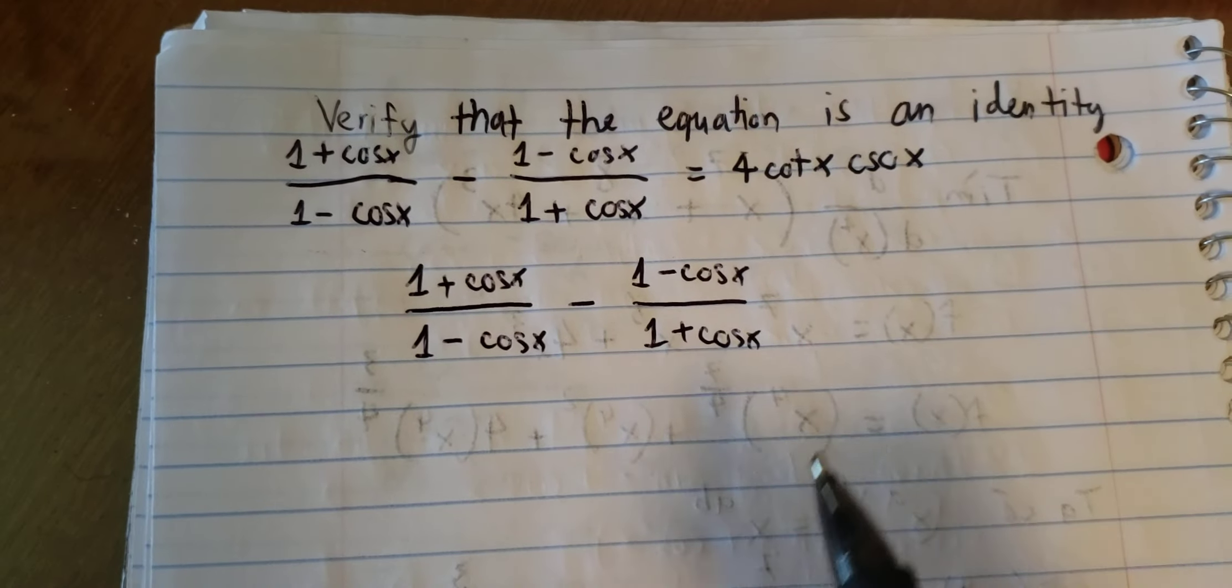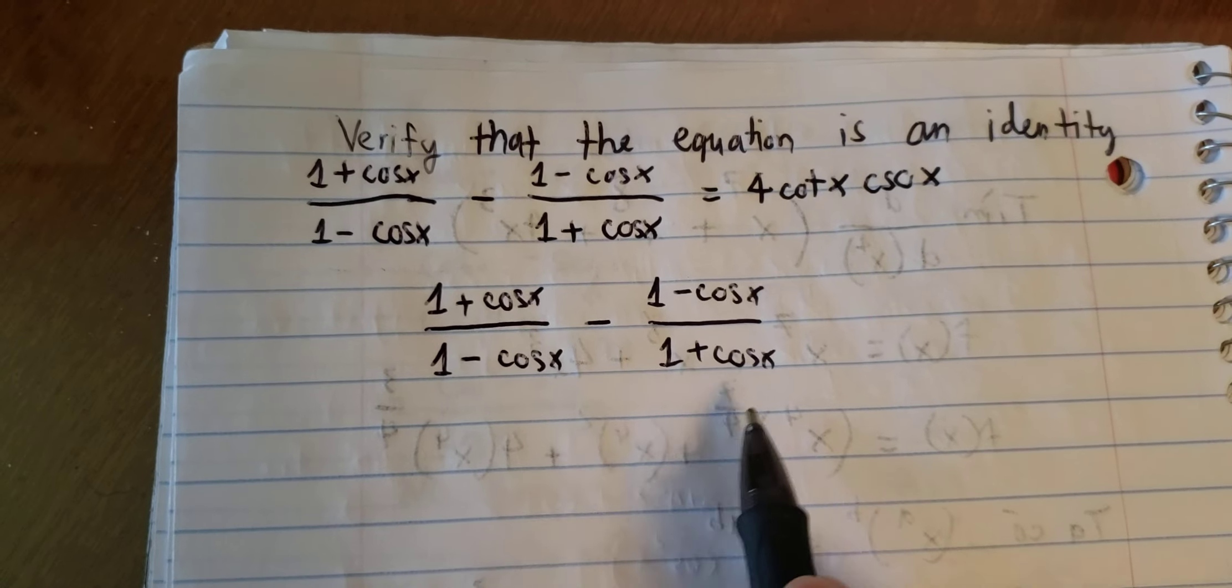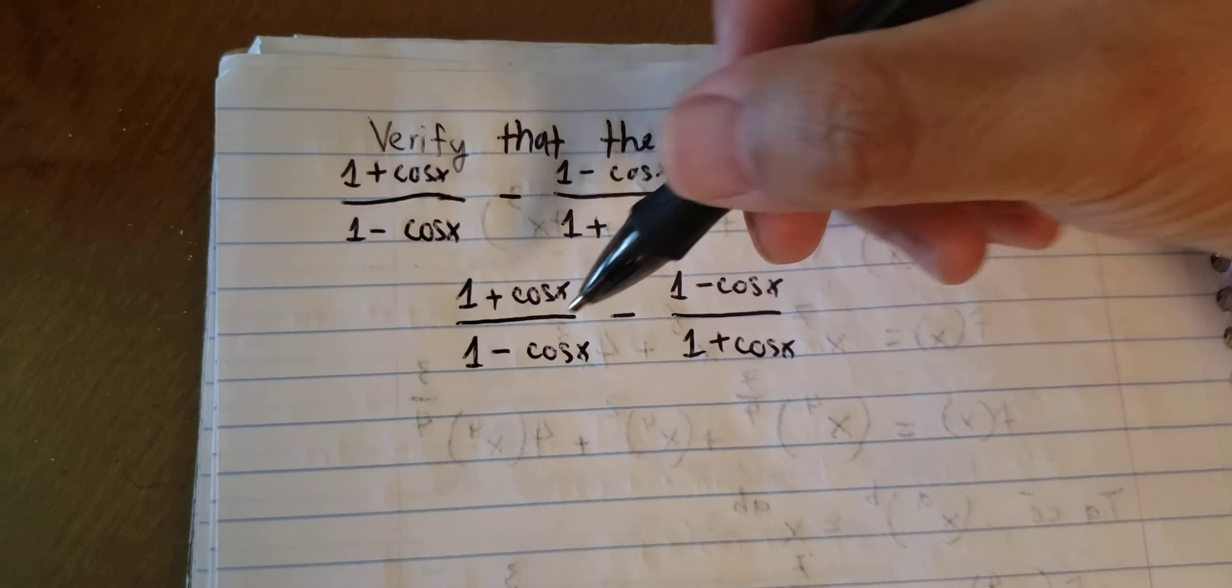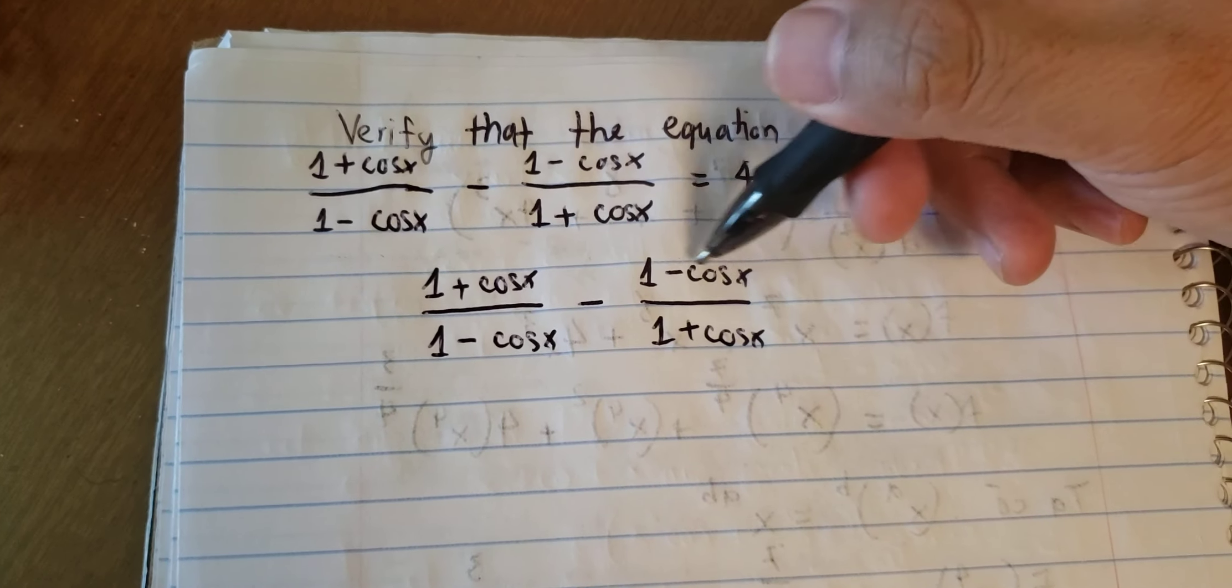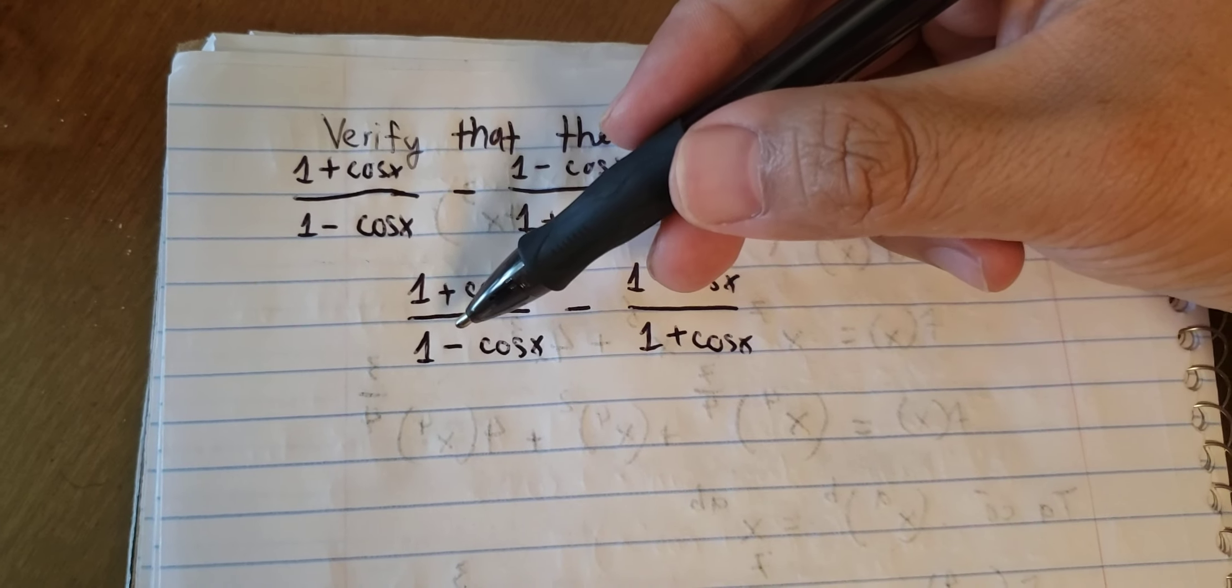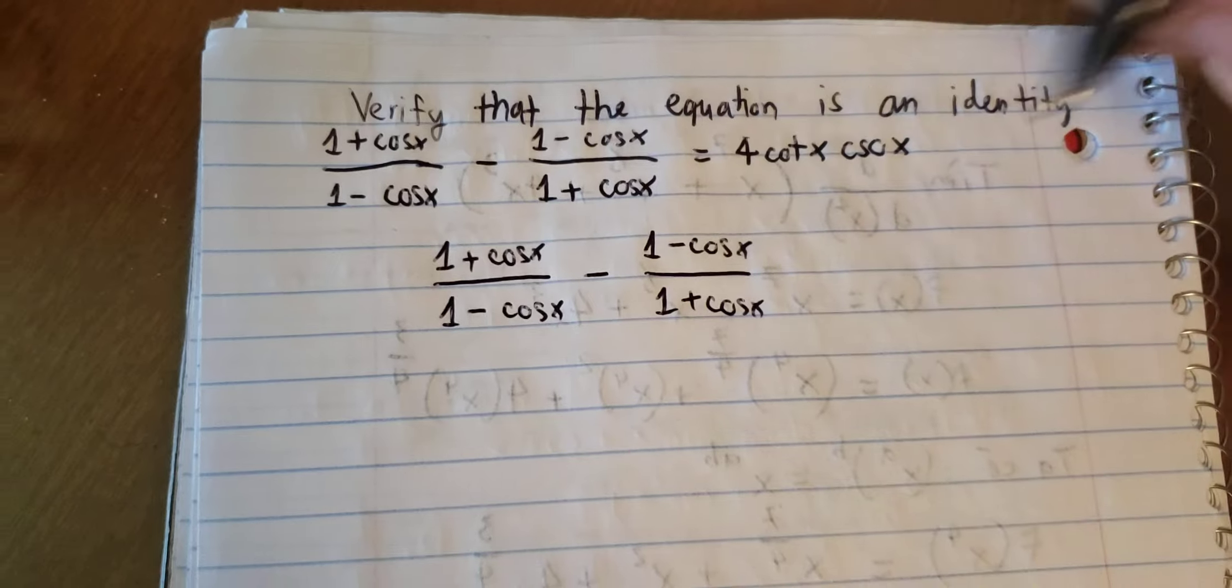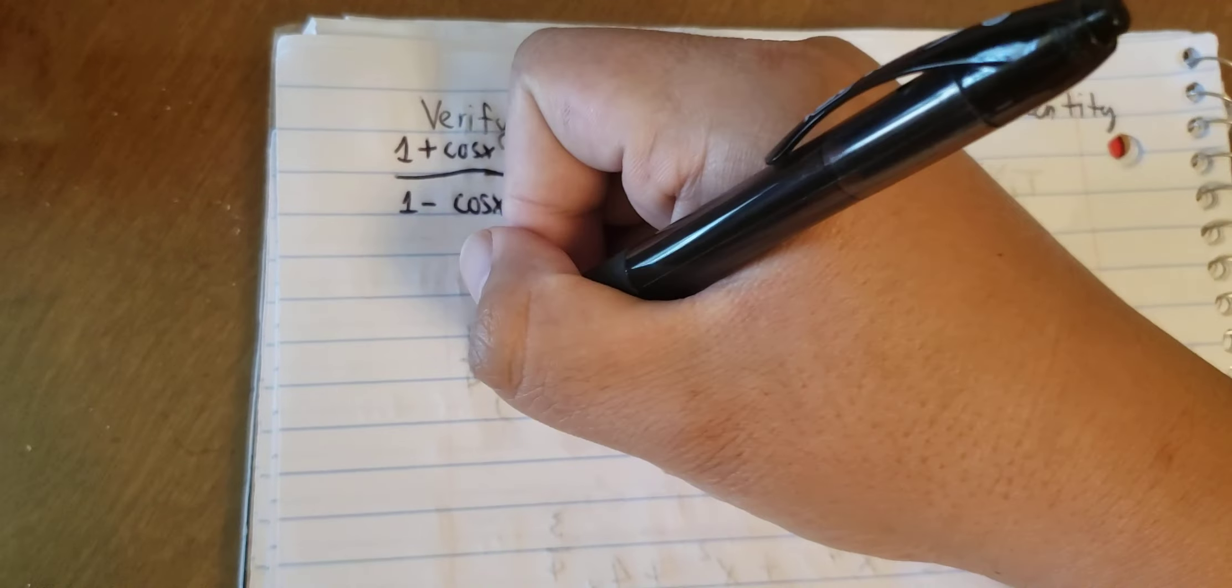I will use a common denominator. This one will multiply by 1 plus cos x and this one will multiply by 1 minus cos x. So we have like this.